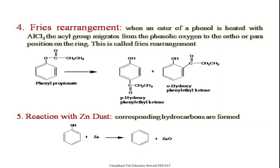Next comes the Fries rearrangement. When an ester of a phenol is heated with AlCl₃, the acyl group migrates from the phenolic oxygen to the ortho or para position on the ring. For example, phenyl propionate when heated in the presence of AlCl₃, the acyl group (COC₂H₅) migrates to the para position to give para-hydroxyphenyl ethyl ketone, or to the ortho position.